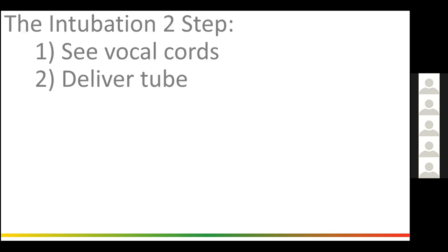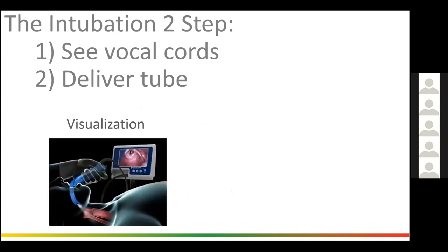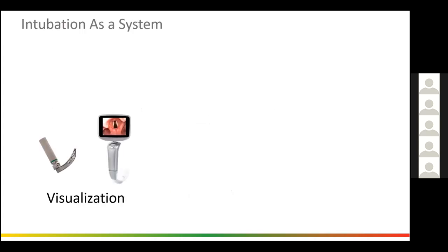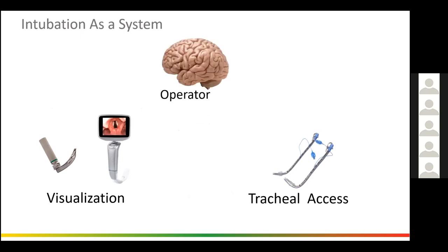Intubation is a two-step procedure. We have to be able to see the vocal cords, and then we have to be able to deliver a tube through the vocal cords. We break it into two components: visualization components and tracheal access components. Intubation is a system — visualization components, tracheal access components, and operator component.